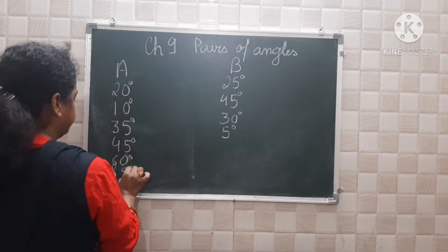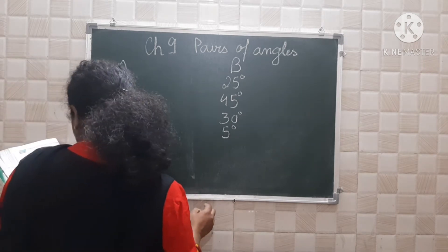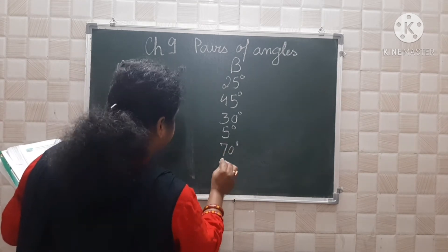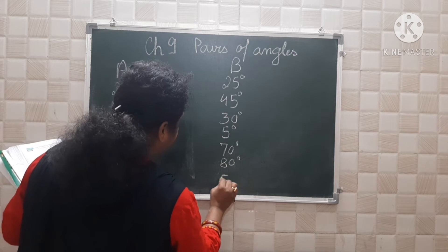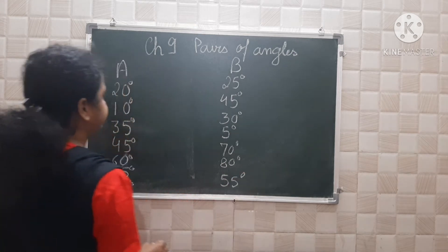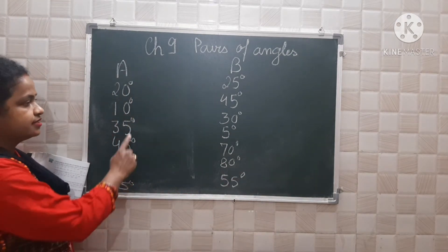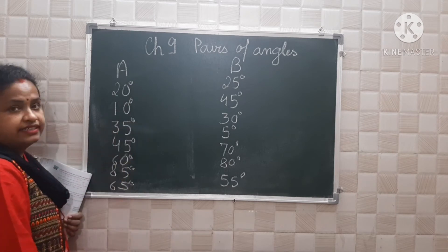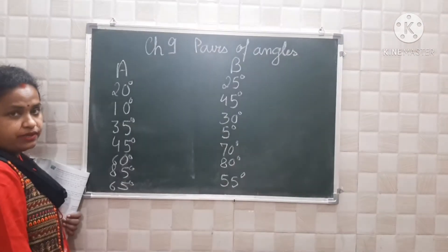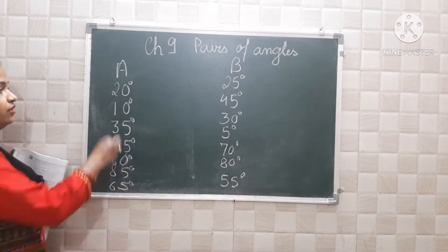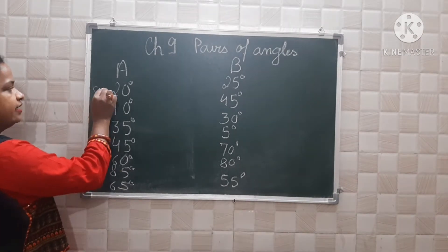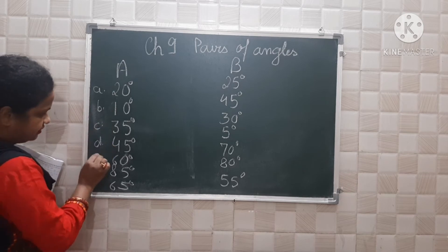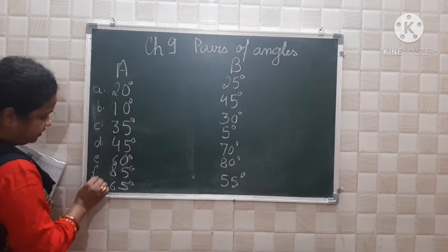Don't forget to put the degree symbol. Group B values are: 5 degrees, then 70 degrees, 50 degrees, 50 degrees, and 55 degrees. You should add in such a manner that both values sum to 90 degrees. So you may label them as small A, B, C, D, E, F, and G.